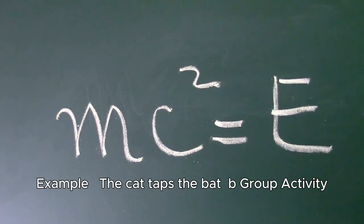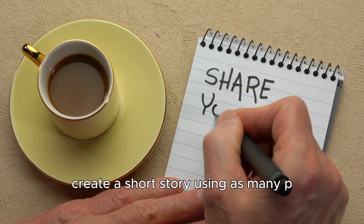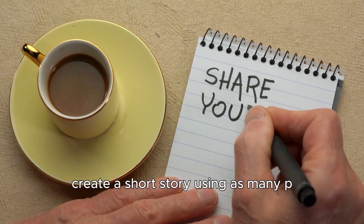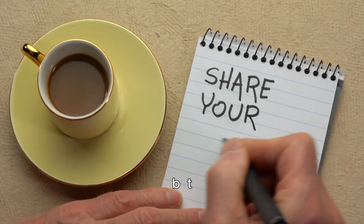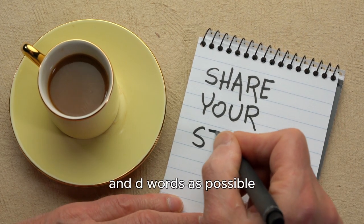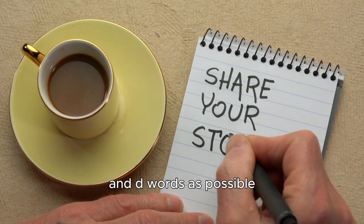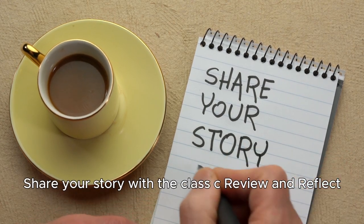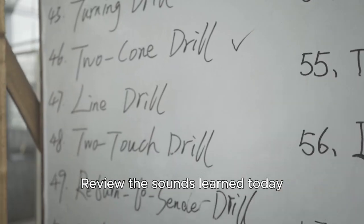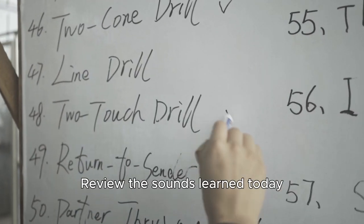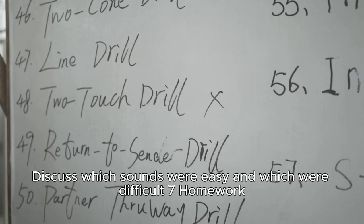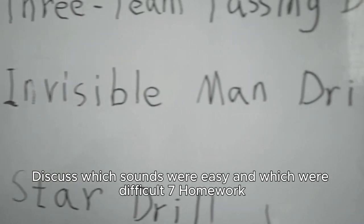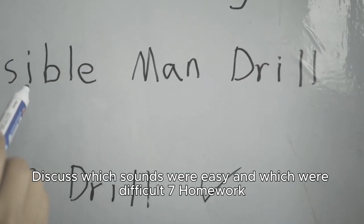Group activity: In small groups, create a short story using as many P, B, T, and D words as possible. Share your story with the class. Review and reflect: Review the sounds learned today. Discuss which sounds were easy and which were difficult.